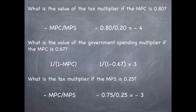What is the tax multiplier if the MPS is 0.25? We take negative MPC divided by MPS. We know that our savings is 25%, so that means our consumption is 75%. So we take negative 0.75 divided by 0.25, which equals negative 3.